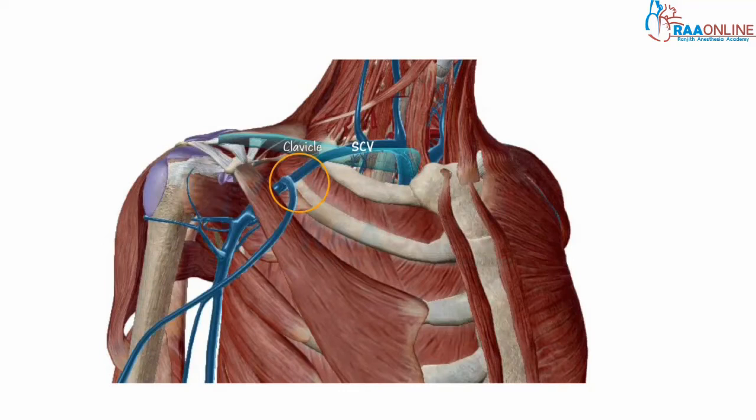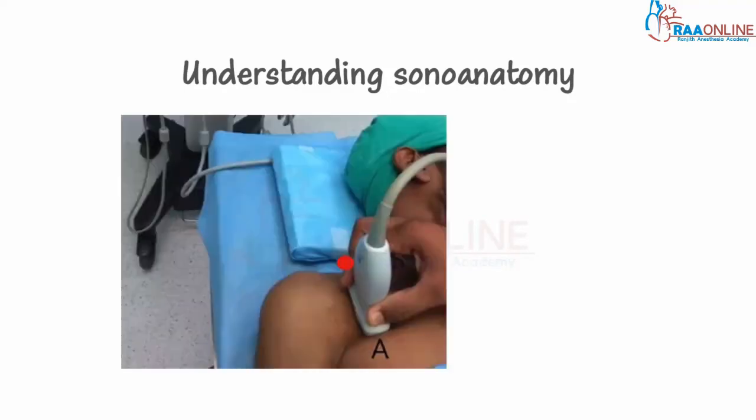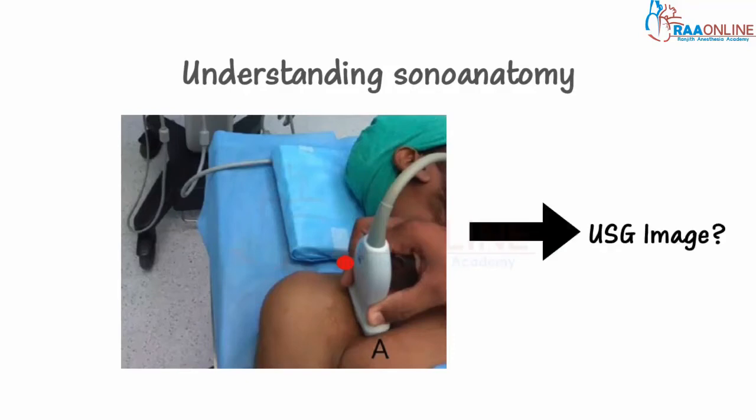With these basic concepts, let us try to understand the sonoanatomy of the vein. With the patient lying in the supine position, arm adducted by the side, a high frequency linear probe is placed beneath the coracoid process with the probe marker cephalad. What is the ultrasound image that is generated?